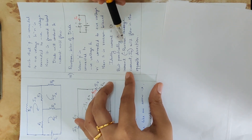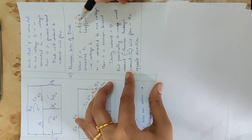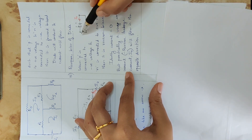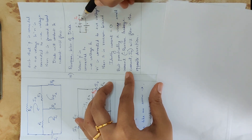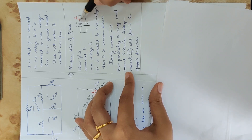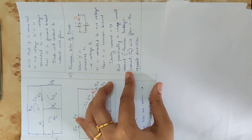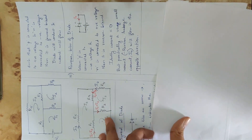Practically, a very small current flows — in the micro-ampere range. This is called reverse leakage current. It flows in the opposite direction compared to forward current. If forward current flows left to right, leakage current flows right to left. This is because there are no majority carriers — only minority carriers cause this small current.